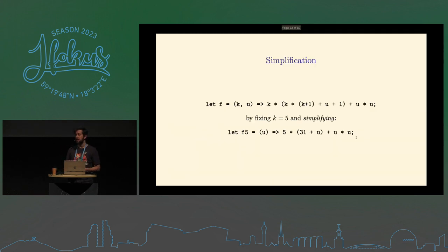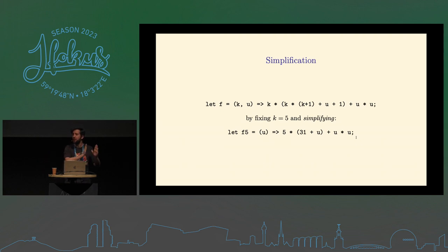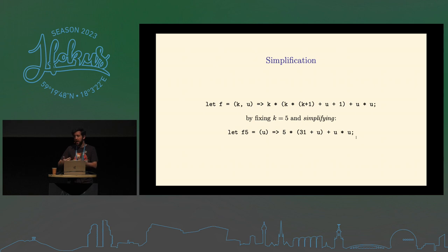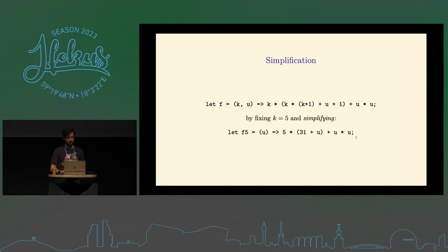Partial evaluation does change the program text, by applying a technique called simplification. We don't just bind the parameter — we simplify as much as possible until we obtain a function that is semantically equivalent to the first one, computing the same result, but with different text. With K equal to 5: 5*5*5 = 125, plus 1 = 126... ultimately we get a simplified expression in U that is equivalent but different in form.